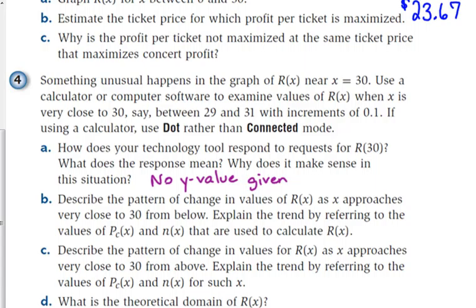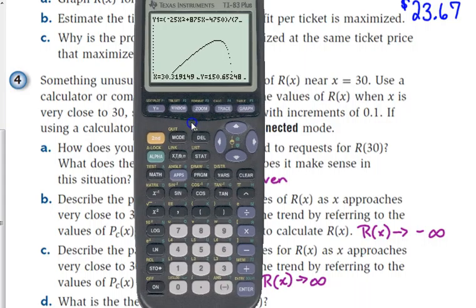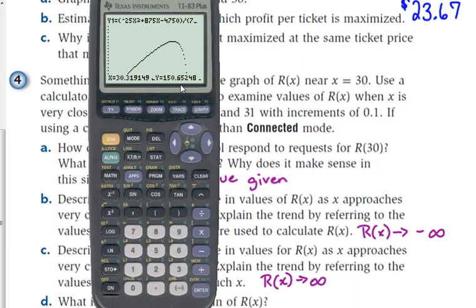Part B asks you to find a pattern of change in values of R of X as X approaches very close to 30 from below. From below means values that are less than 30, and that's what we were just looking at. R of X values are becoming more and more negative, so we're going to say that they are approaching negative infinity from the left side of 30. Part C is exactly the same but from above, so that's values that are above 30 or from the right side of 30. And those values for the function R of X are headed towards positive infinity, as evidenced when I was showing you, when it was going along, all of a sudden you jump up to 150.